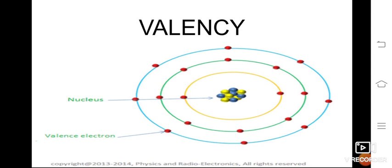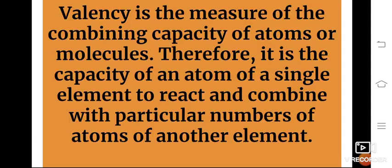So all the atoms have a valence — that is, the capacity of combining with other atoms. The combining capacity of those atoms we can call valence. Different atoms can have different valence. Valence is the measure of the combining capacity of atoms or molecules, because atoms combine to form a molecule.